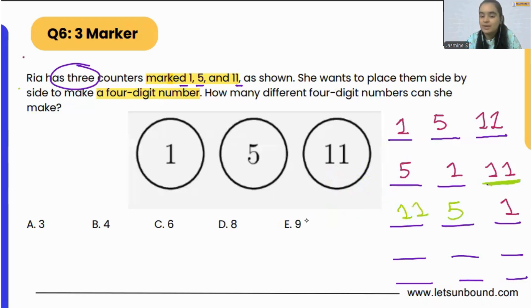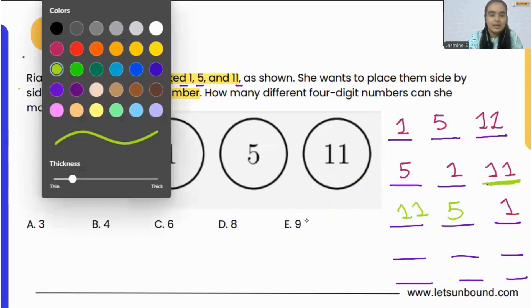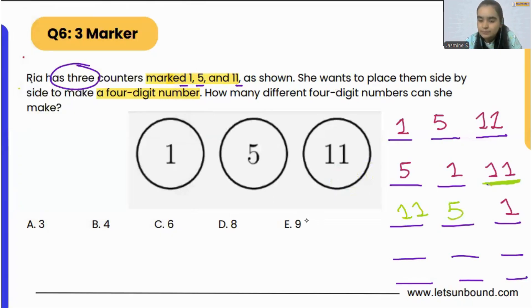One thousand one hundred and fifty-one. Now moving on, we can have 5 in the end, and 1s here, so it's going to be one thousand one hundred and fifteen. We can't do 1, 1, 1, 5 because this will give us the same answer as the previous one. So this is also not possible.